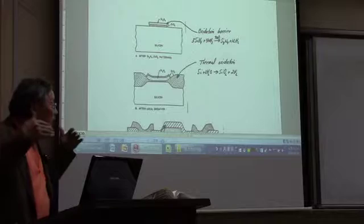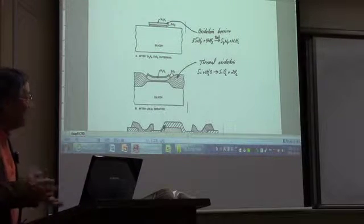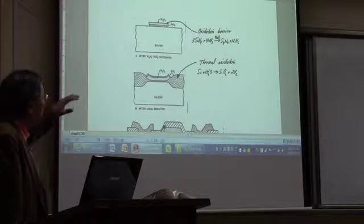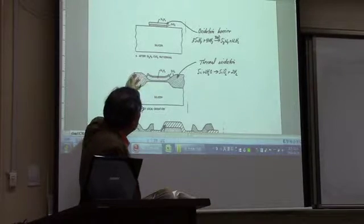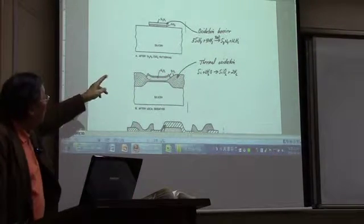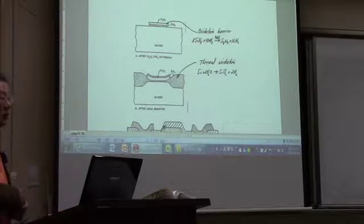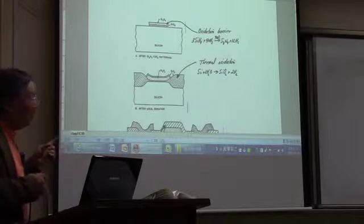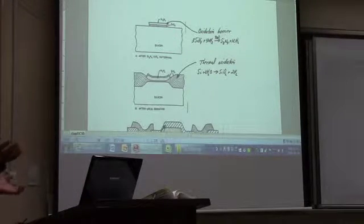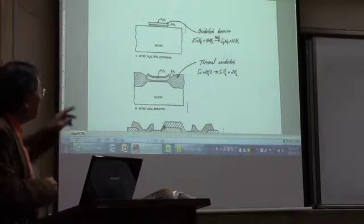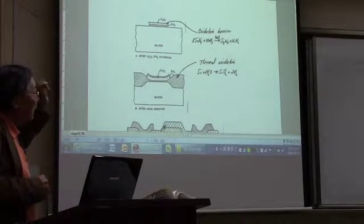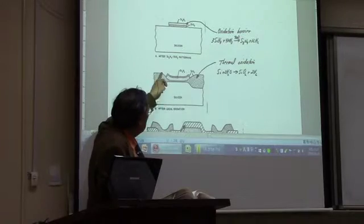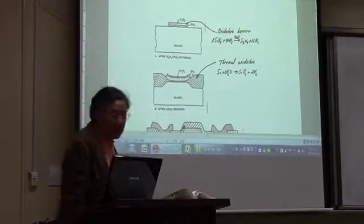To grow the epitaxial layer, we have to do the CVD process. Another application we have discussed is the LOCOS process. For LOCOS, you do the oxidation — that may be done with thermal oxide, with thickness around 300 Angstroms. But you have to deposit the silicon nitride by CVD. Then you carry out the LOCOS process and have a smooth surface for the active region.